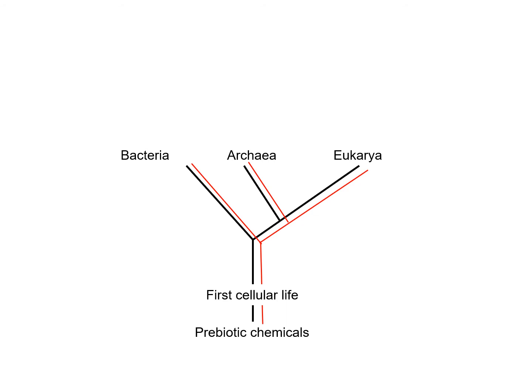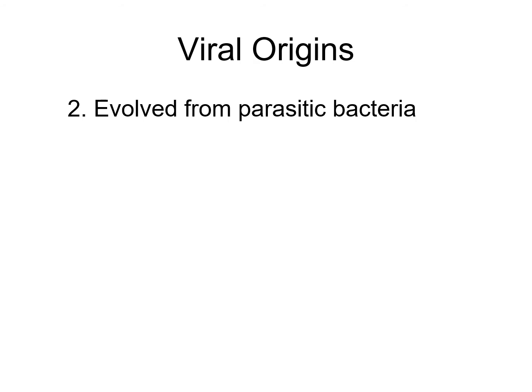A second hypothesis is that viruses used to be cellular — they represent very highly evolved bacteria or prokaryotes that became parasitic and lost their cellular structure. They've been reduced to the minimum, no longer needing to make proteins because the host cell does that for them. This mirrors a trend we see in parasitic living organisms: a loss of structures and functions that the host takes over.